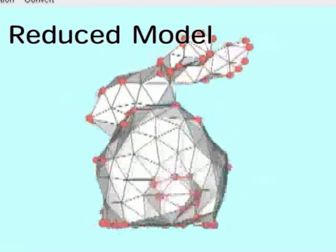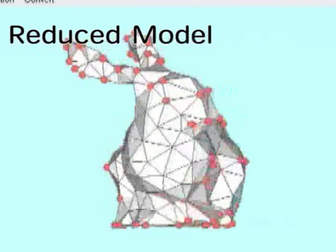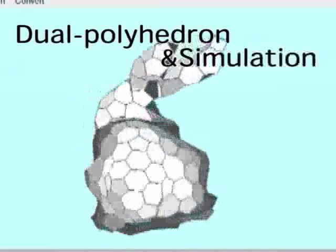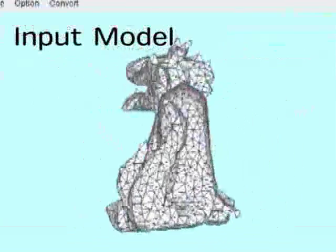This is a reduced mesh. The system then takes the dual of the triangular mesh and applies physical simulation. This is another example.